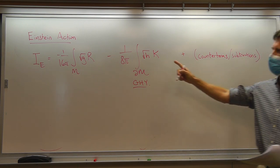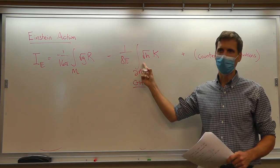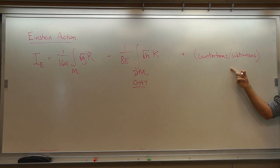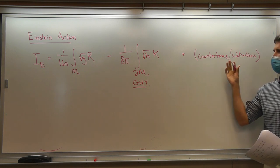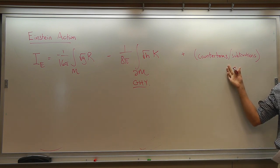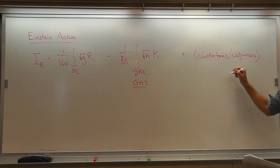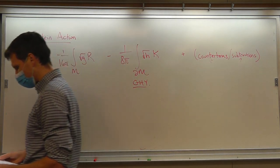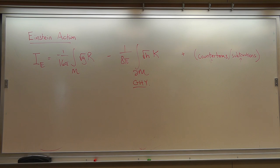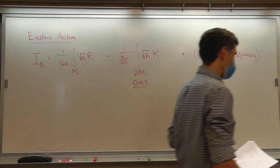On a manifold with boundary, the GHY term involves h — the induced metric on the boundary — and K, the trace of the extrinsic curvature of the boundary as embedded in the full manifold. There's also one more term, the counterterm or subtraction term. The first two terms don't care about the cosmological constant — we just add it in. This procedure deals with infinities from infinite-volume spaces, and what you use depends on the asymptotics: asymptotically flat space uses the subtraction method; asymptotic ADS uses a counterterm method. Closed spaces have no boundary terms, so it's not an issue there.